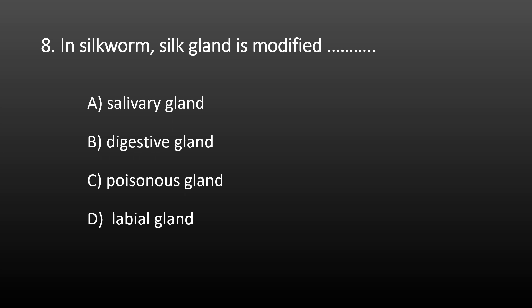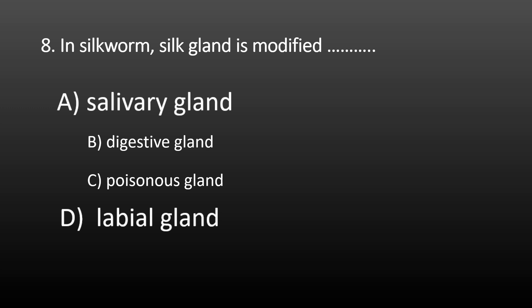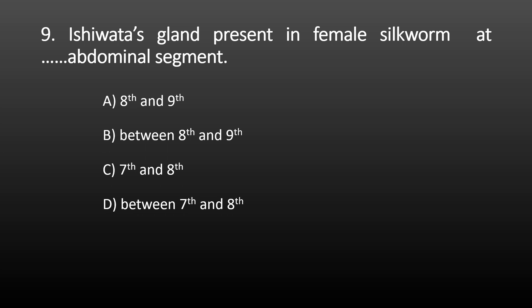Next MCQ: in silkworm, the silk gland is a modified form of which gland? Options are: salivary gland, digestive gland, poisonous gland, and labial gland. The silk gland synthesizes silk, which helps to form the cocoon around the pupa body. This silk gland is a modification of the salivary gland. This gland is also called the labial gland. Therefore, the silk gland is a modified labial gland or salivary gland.